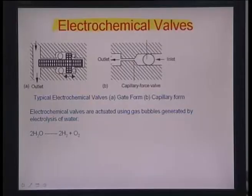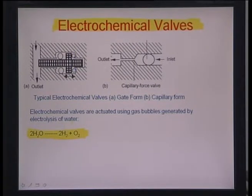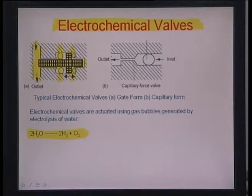Let us see what electrochemical valves really are. It is essentially a simple system where H₂O is electrochemically converted into hydrogen and oxygen. Looking at the overall architecture, this is the outlet of a micro pipe with a gating device, and there are four electrodes in this region that pump in electrons so that bubbles get formulated.